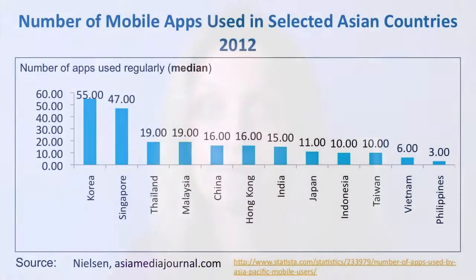Whereas in North America almost every undergraduate student reported to be using mobile devices in various aspects of his or her life, the numbers for Asia, for example, vary greatly. This slide illustrates the number of mobile apps regularly used in some selected Asian countries in 2012. In Korea and Singapore, smartphone users had the largest number of regularly used apps.